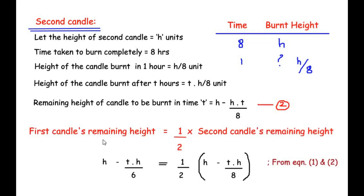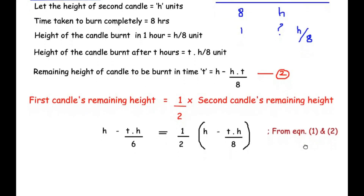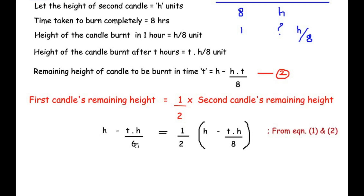The first candle's remaining height equals one-half times the second candle's remaining height. From equation one, the first candle's remaining height is h minus th over six, and from equation two, the second candle's remaining height is h minus th over eight. So we write: h minus th over six equals one-half times (h minus th over eight).